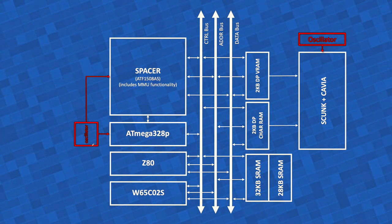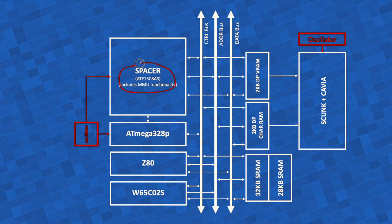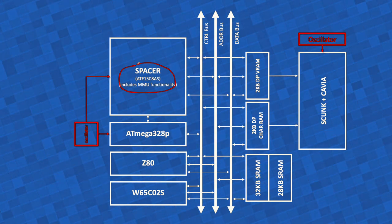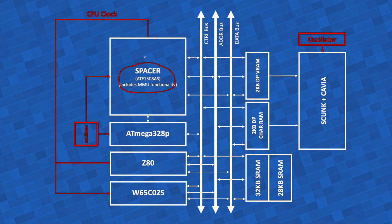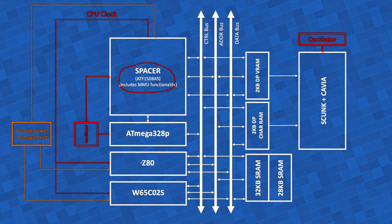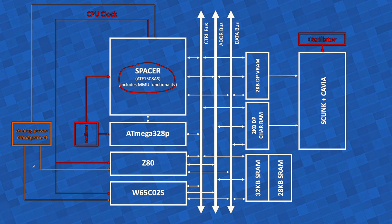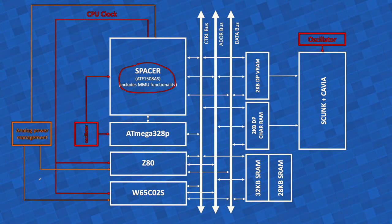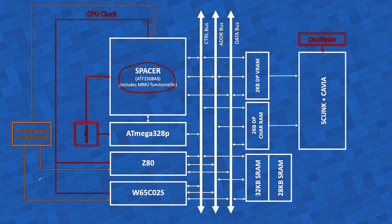The clock signal will also be fed directly into Spacer, because Spacer will do the clock management for the CPUs. In addition to serial-to-parallel translation and memory management functionality, it will also do the clock management and power management of the two CPUs. The CPU clock will come from Spacer, derived from the original oscillator, and there will be an analog power management circuit that will allow the user to choose one CPU and automatically power down the other.